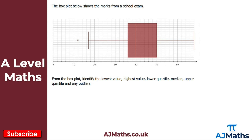For the final question, we have a box plot showing marks from a school exam. We need to identify the lowest value, highest value, lower quartile, median, upper quartile, and any outliers. Outliers on a box plot are shown as a small cross. I can see one outlier here — counting up in twos: 10, 12, 14, 16, 18, 20 — the outlier is a mark of 12. There are no outliers above the highest value.